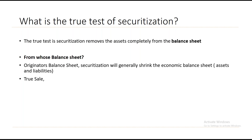Another test is whether there is a true sale. A true sale means complete delinking from the originator and the special purpose vehicle. Legally they want to create a separate wall, and only when it is a true sale will it become bankruptcy remote — meaning none of the credit worthiness impact of the originator will affect the special purpose vehicle. These are the two tests to keep in mind.